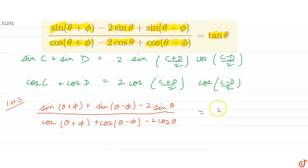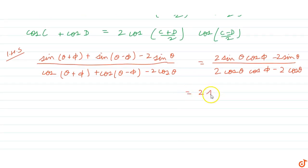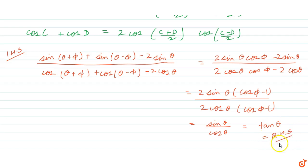This gives us 2sin θ·cos 5 minus 2sin θ in the numerator, divided by 2cos θ·cos 5 minus 2cos θ in the denominator. Taking 2sin θ common from the numerator and 2cos θ common from the denominator, we get (cos 5 minus 1) over (cos 5 minus 1), which simplifies to sin θ over cos θ, and that equals tan θ — which is what we had to prove.